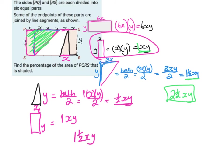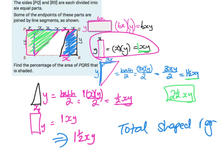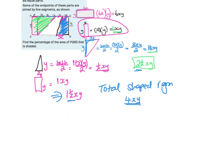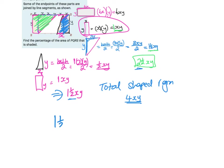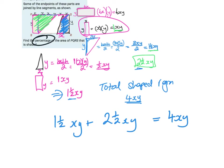The green section is 2.5xy and the blue section is 1.5xy. Adding them: total shaded area = 2.5xy + 1.5xy = 4xy.